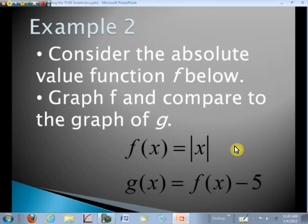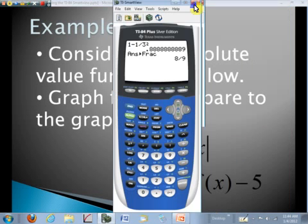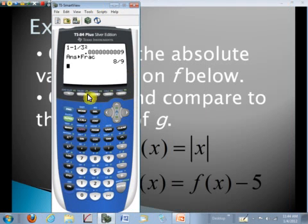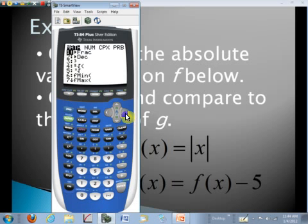So we want to graph both of these in the same viewing window. So to do that, we'll go ahead and hit the y equals menu. And go to the math button, the number menu, and absolute value is the first option. And we'll go ahead and put in x. And let's go ahead and graph this in the standard viewing window now. So I'll just go ahead and hit zoom and option 6 for the standard viewing window.